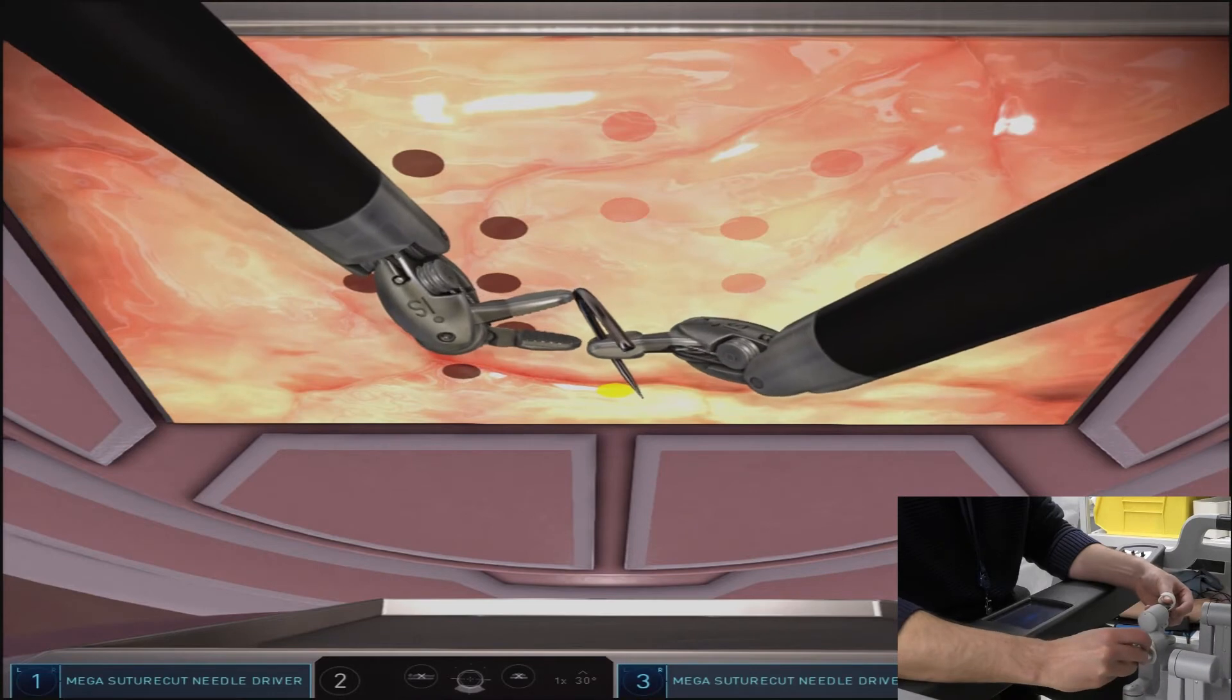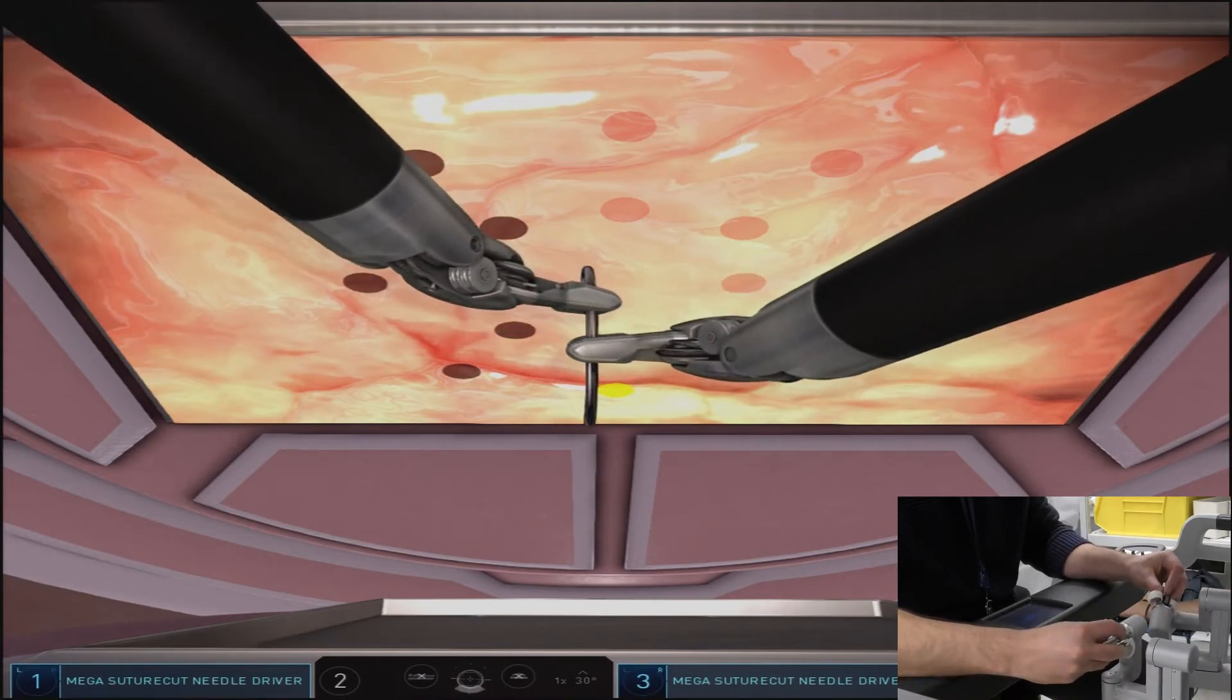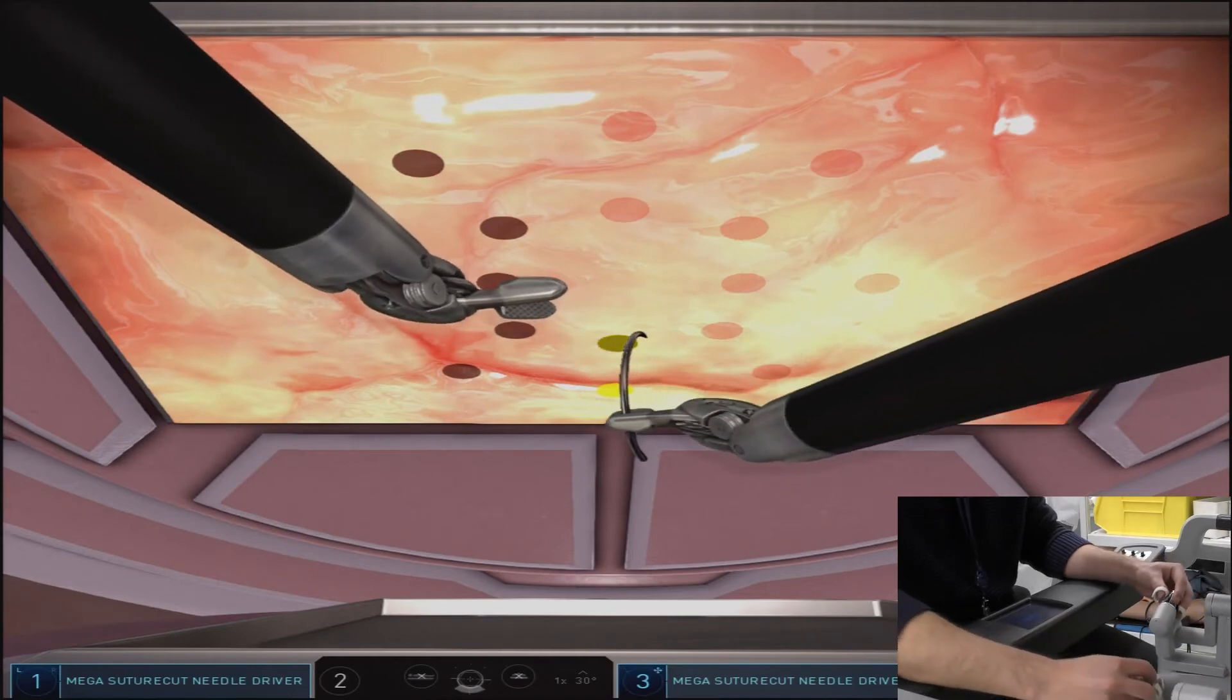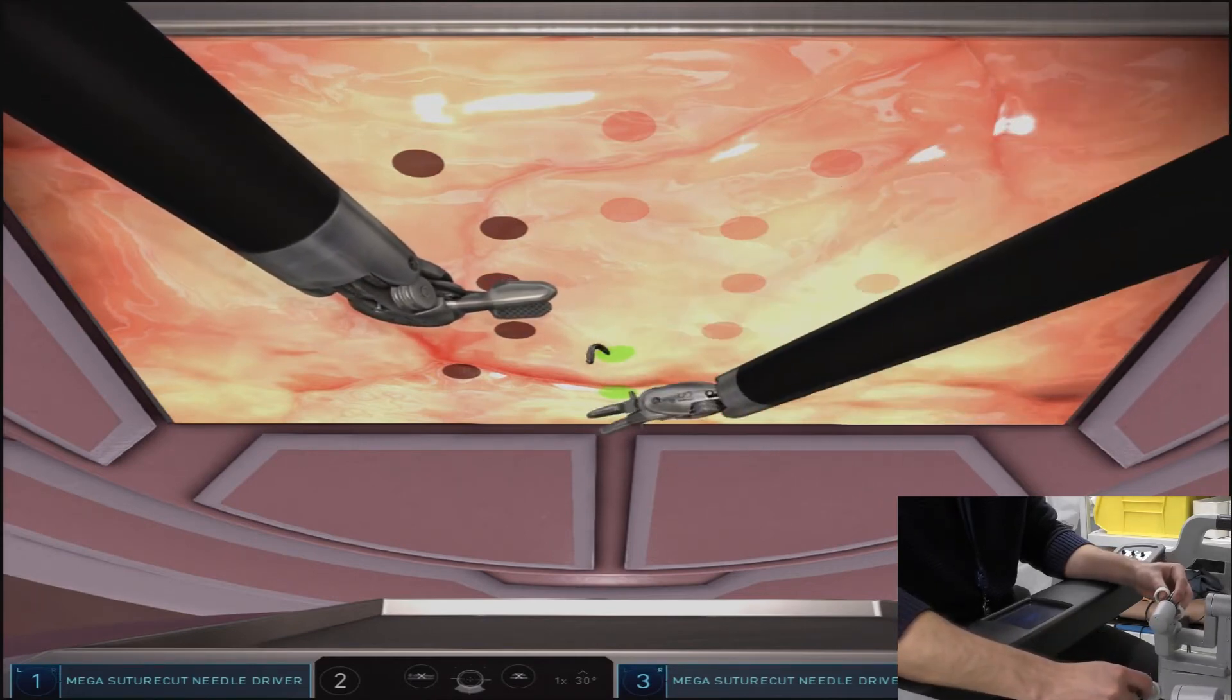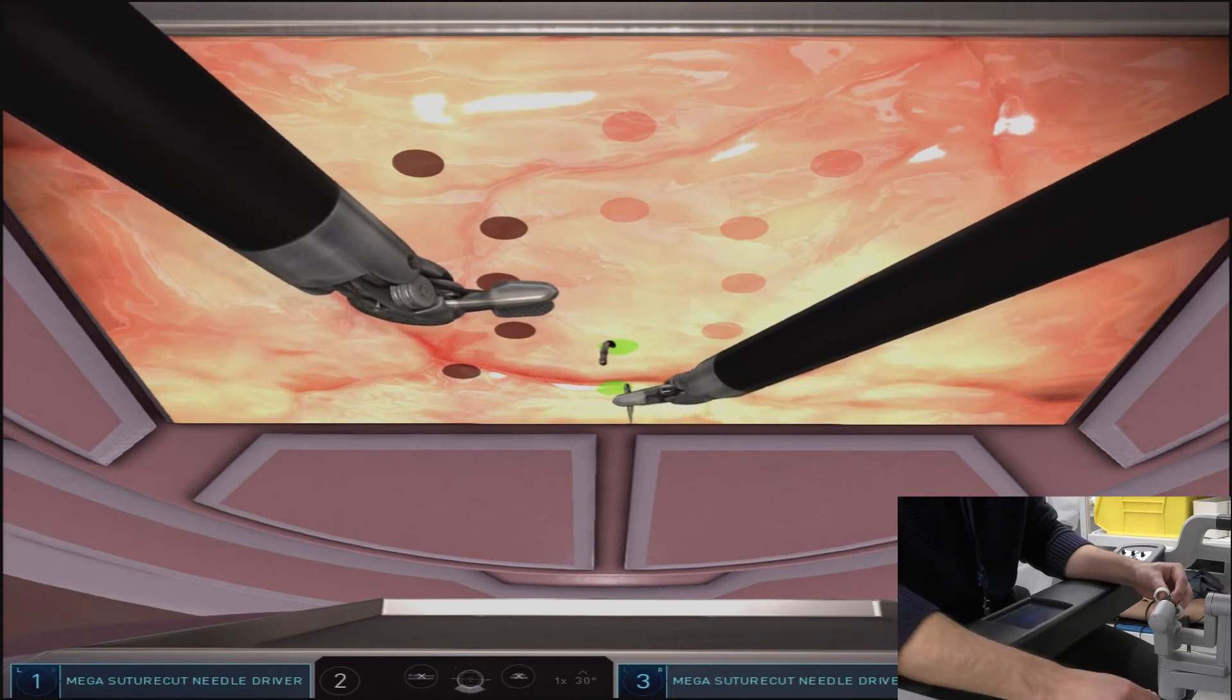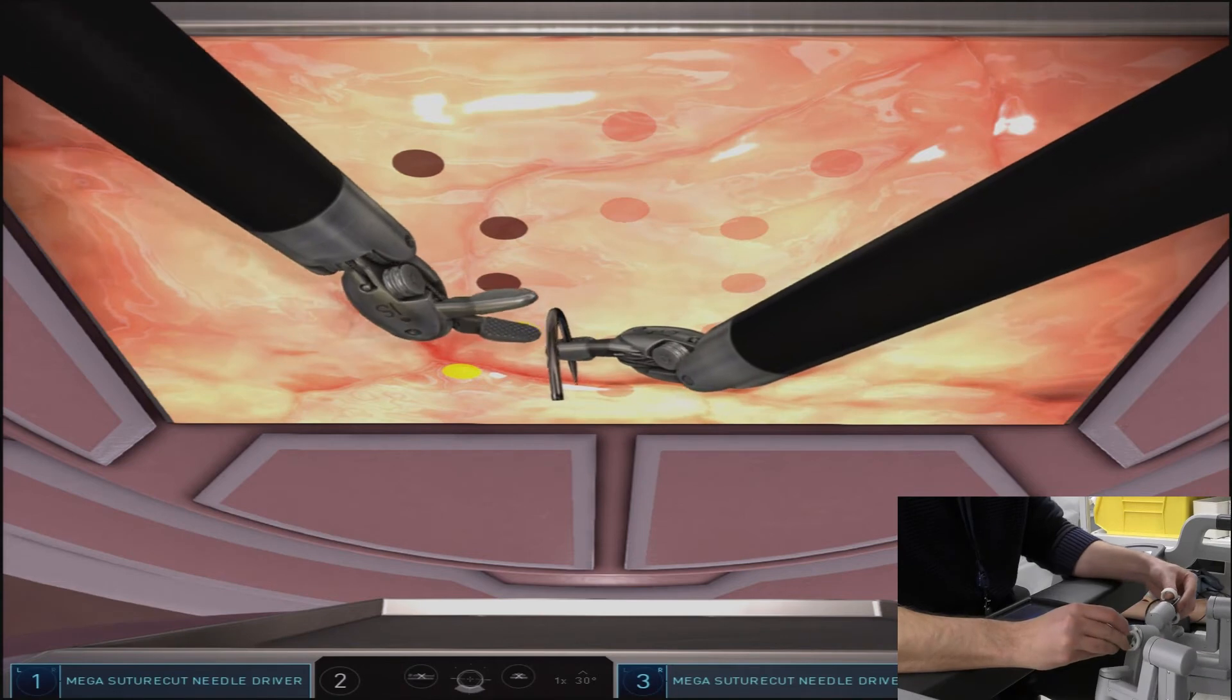Here again you'll see us walk back to the distal portion of the needle on the reload, and again grabbing the needle with the right hand in the pronated position. It should also be noted that this middle inferior throw is the farthest away from the camera, so may require a camera position change or a clutch.